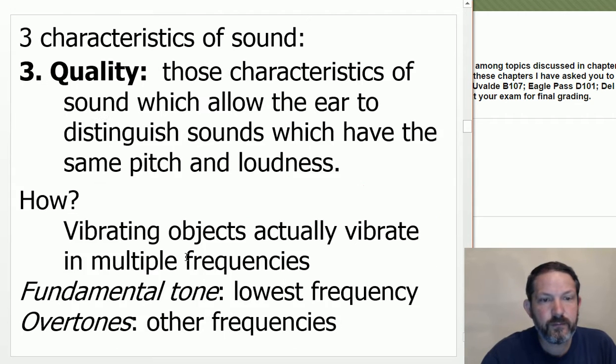Not that that makes a lot of sense, just saying it, but at least now you know that FM is for frequency modulation and AM is amplitude modification. Three characteristics of sound. The quality of those characteristics of sound which allow the ear to distinguish sounds which have the same pitch and loudness.